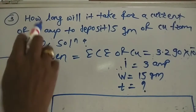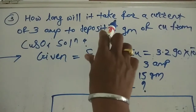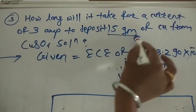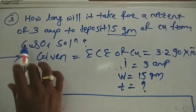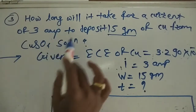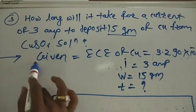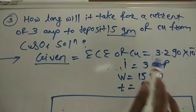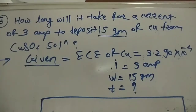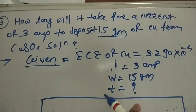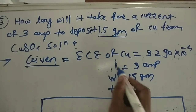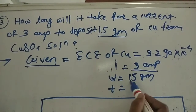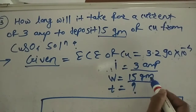The third problem: how long will it take for a current of 3 ampere to deposit 15 gram of copper from copper sulphate solution? The given electrochemical equivalence of copper is 3.290 × 10⁻⁴. The current is 3 ampere and the weight deposited is 15 gram.